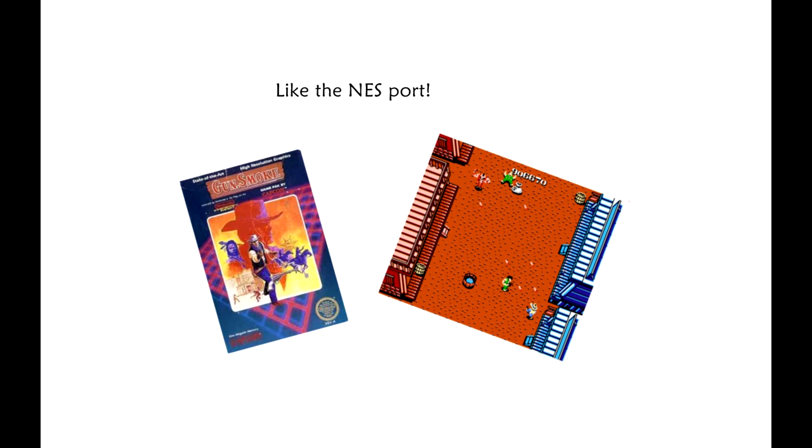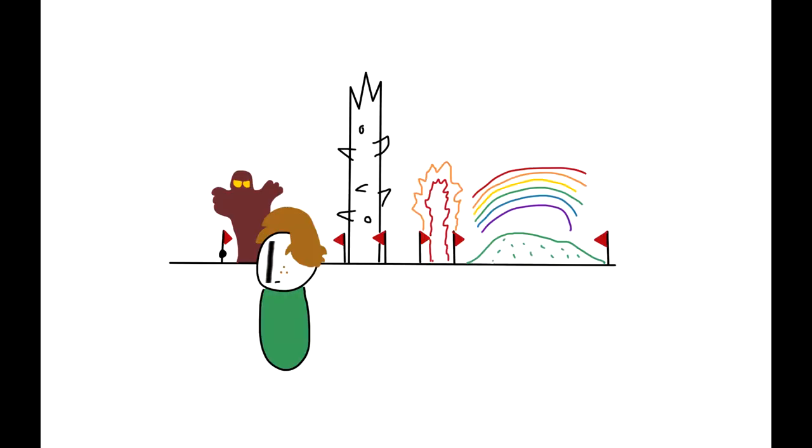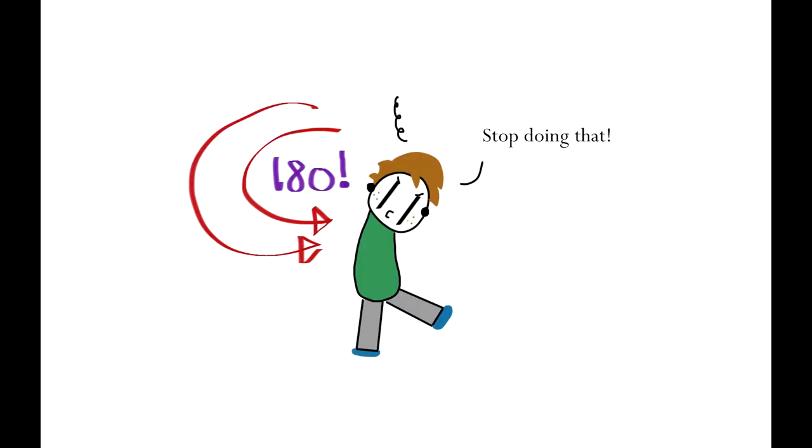Think of how unforgiving the original Castlevania is. Now, imagine it without the checkpoints in each stage. By adding checkpoints, you lower the consistency in a game, allowing for more intense level design. The reverse is clearly just as valid.